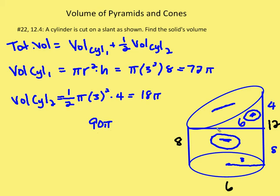The height of 4 and 8 were found by drawing a horizontal line perpendicular to the cylinder's height. This cuts off the bottom portion of 8 from the total of 12, leaving the top portion as 4.